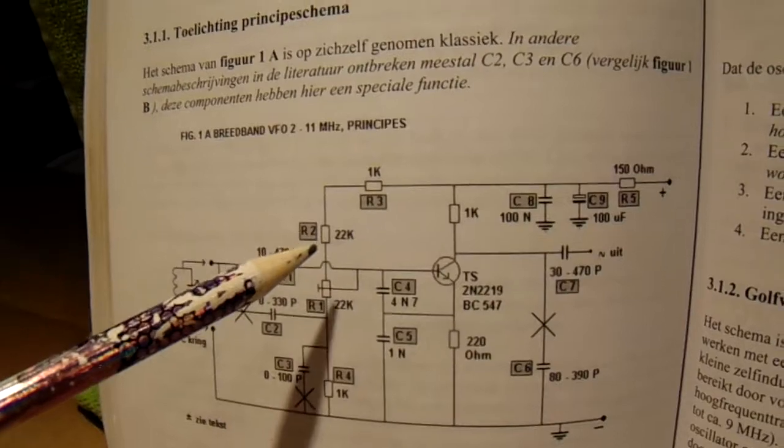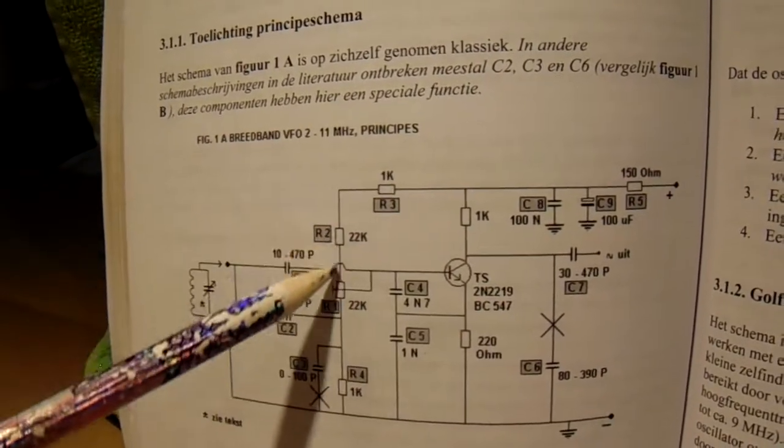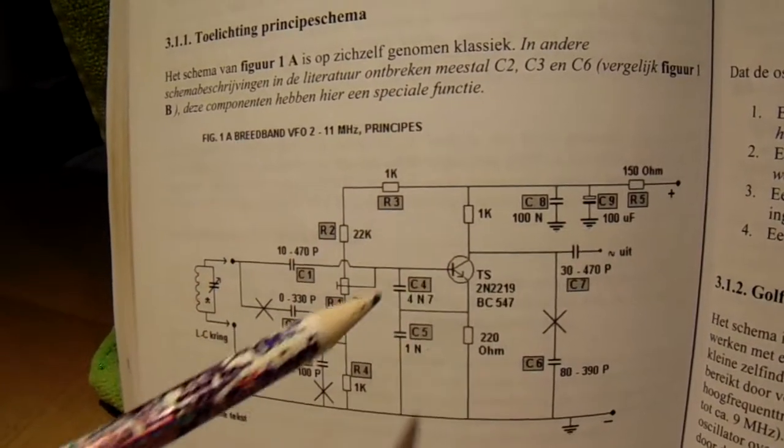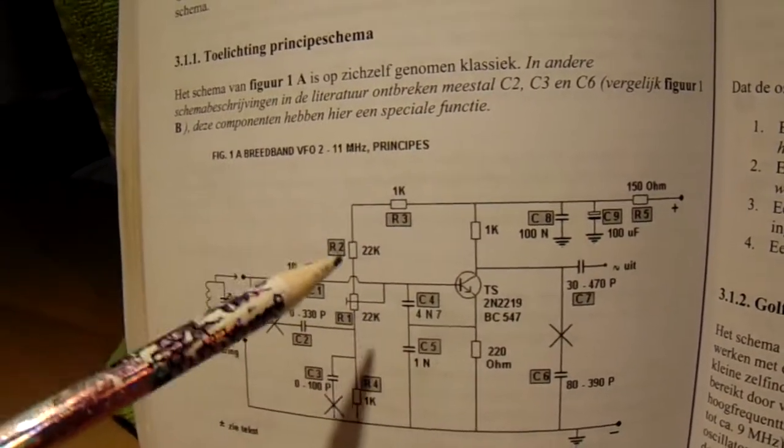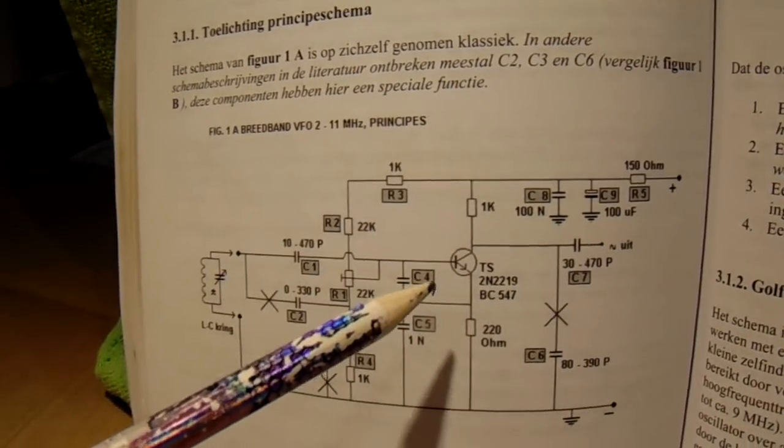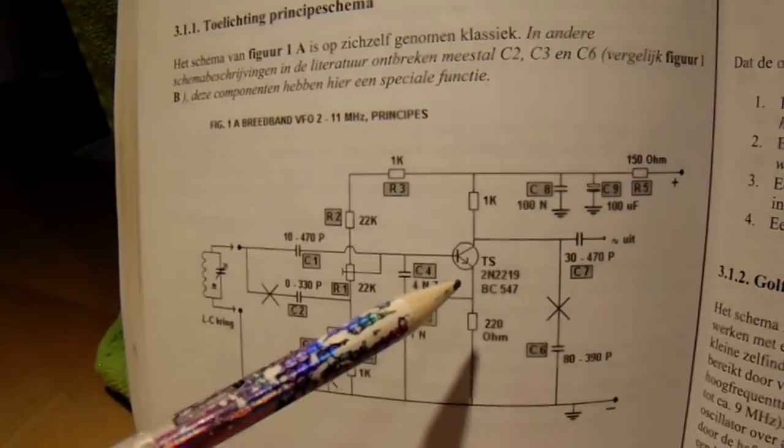This resistor by the way protects the oscillator circuit for a too high base current, also very important. A too high base current will lead to the immediate destruction from your transistor.